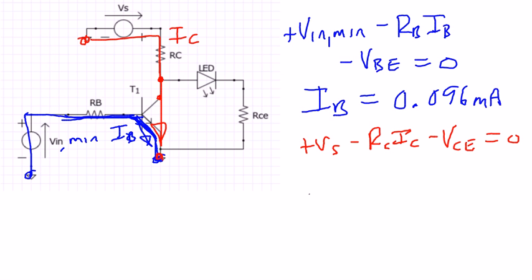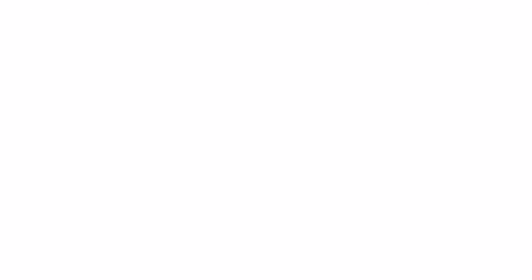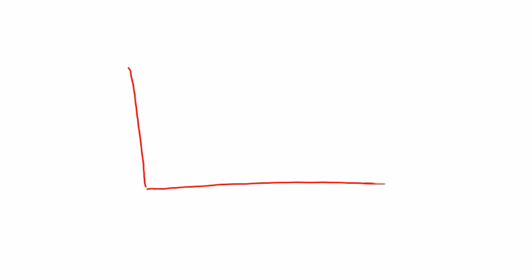So rearranging and solving for IC as shown in the notes, that will end up giving us an IC value equal to 9.6 milliamps. Now you could have solved this a different way. Remember, if the transistor's in saturation, if we look at VIN versus the collector current, VIN for a while we don't get any current, and then once we hit 0.7 just to turn on the transistor, it'll go linear until the transistor saturates and it'll be limited. And at this point right here, this is VIN min.